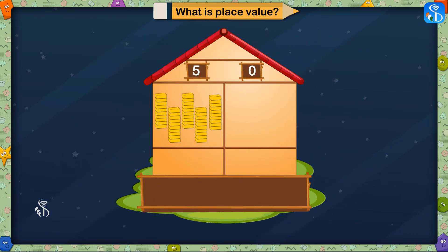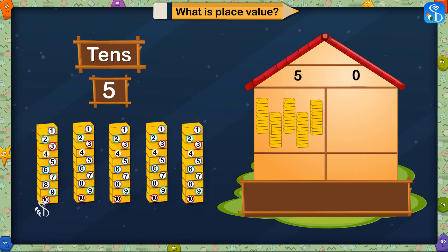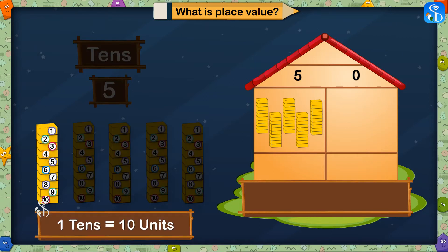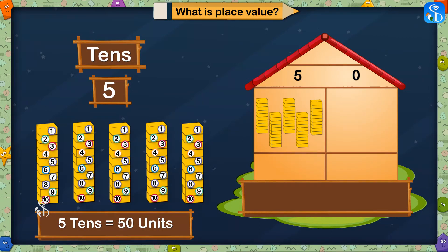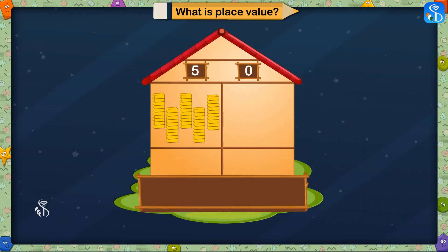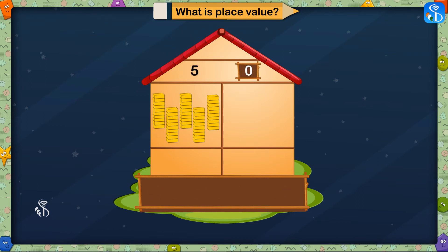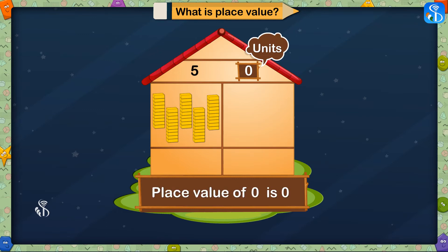In the number 50, 5 is in tens place and 0 is in units place. If we open the bundles of 5 tens, we will get 50 units, because 1 ten is equal to 10 units, so 5 tens will be equal to 50 units. As 5 is in tens place in the number 50, its place value is 50. There is a 0 in units place, so the place value of 0 is 0 only.